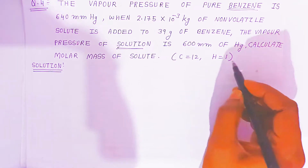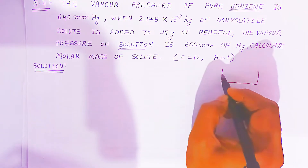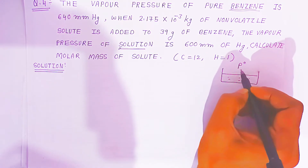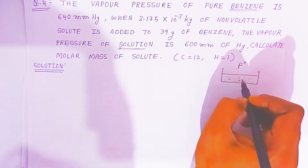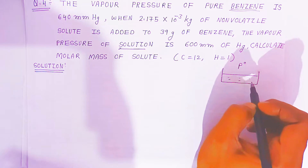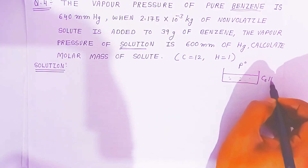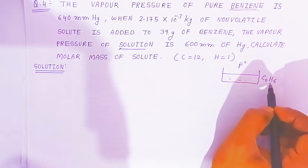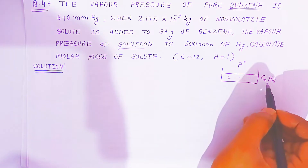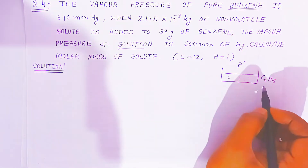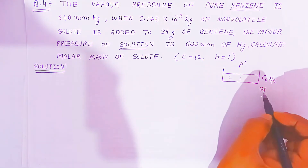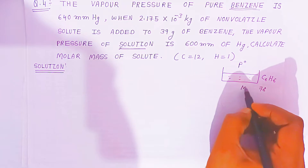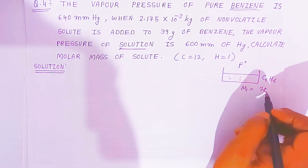For the sake of understanding, I am drawing a diagram. Here we have pure benzene, and because of this pure benzene it will give vapor pressure — that is the pure vapor pressure of benzene, also called the vapor pressure of solvent. Using the formula for benzene C₆H₆: carbon is 12, so 12 × 6 = 72, plus 6 gives 78. So the molecular weight of solvent, benzene, represented as M₁, is 78 grams per mole.